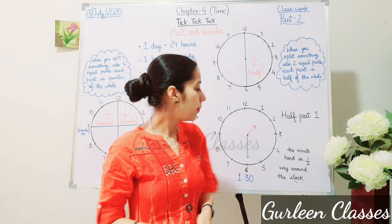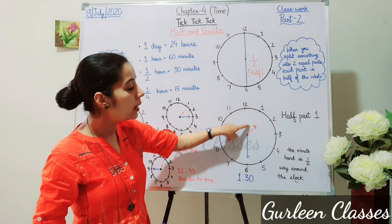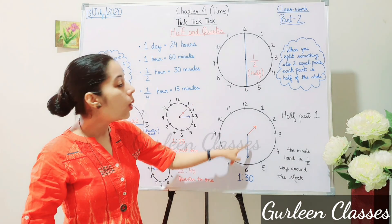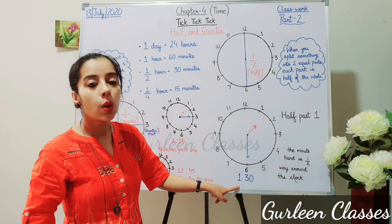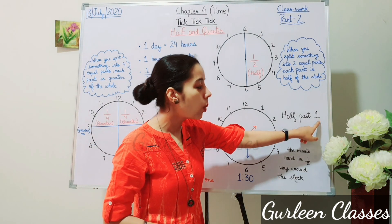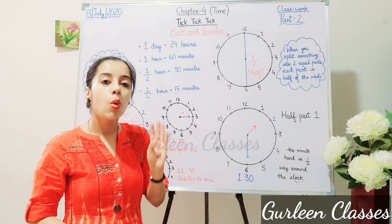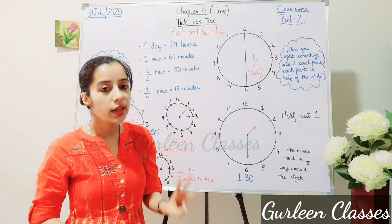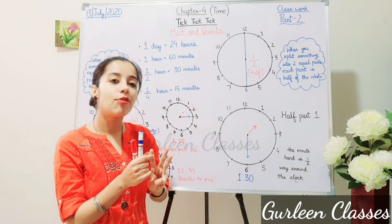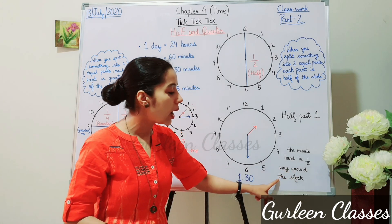Here I have drawn a clock. The hour hand is between 1 and 2, and the minute hand is at 6, so the time is 1:30 — 1 hour 30 minutes. We say this as 'half past 1.' Students, keep in mind: whenever we say 1:30, 2:30, 3:30, we call it half past 1, half past 2, half past 3. It means the minute hand is halfway around the clock.